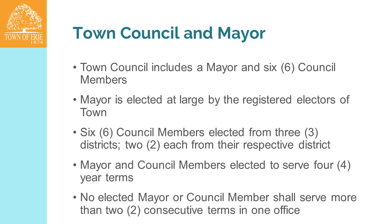Town council includes a mayor and six council members. The mayor is elected at large by the registered electors of the town. The six council members are elected from three districts, two from each district. Since this is our first election under home rule, the top vote getter would be the first council member for four years; the second highest would serve two years, and then four years from then on out. Mayor and council members are elected to serve four years, and no elected mayor or council member shall serve more than two consecutive terms in one office.